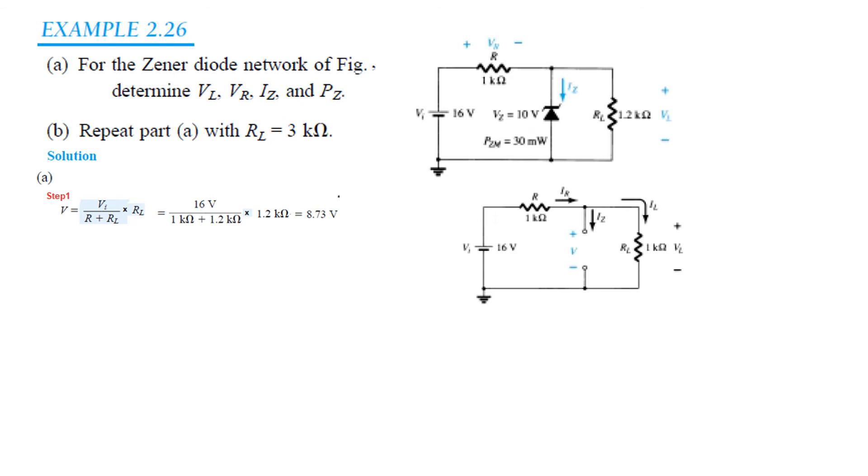So the diode is off because V calculated here is less than VZ and hence the Zener is off.